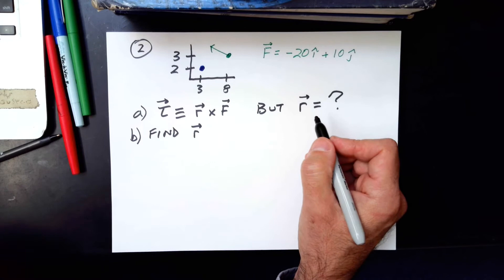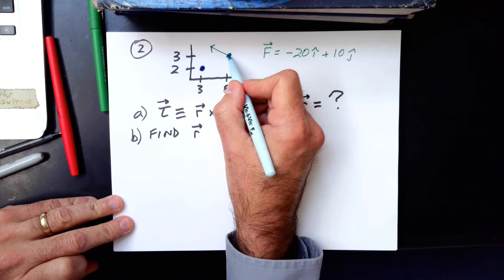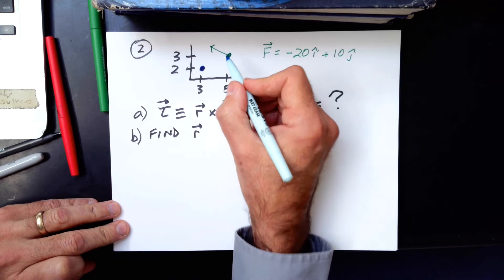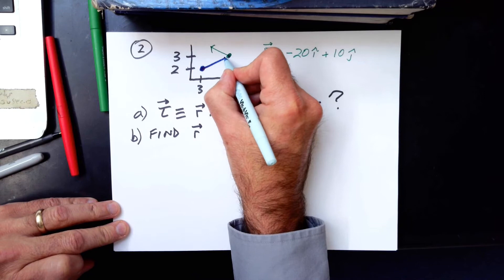Well, the vector for R means an arrow that you draw starting at the axis and ending at the point where the force is applied. This is why this point here, 8,3, has to be given. You can't just say this force acts around that axis and ask for a torque. No, that's impossible. You have to be told where the force makes contact, where it's applied. So to find R, what you do is draw an arrow from the axis to the point where the force is applied. And that's R.